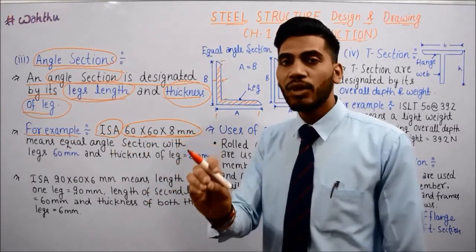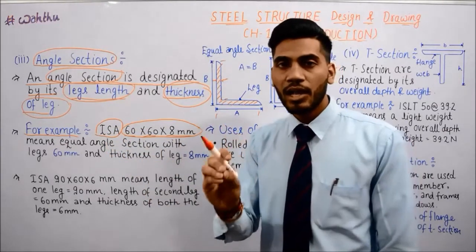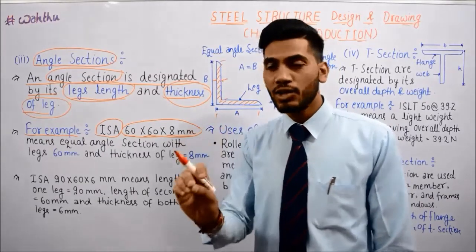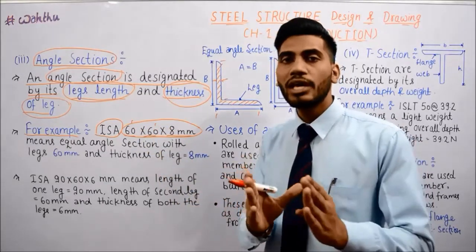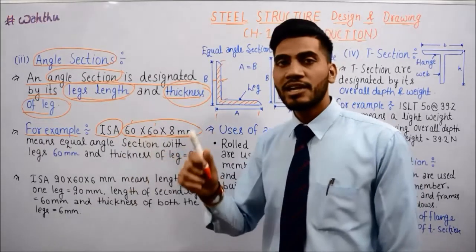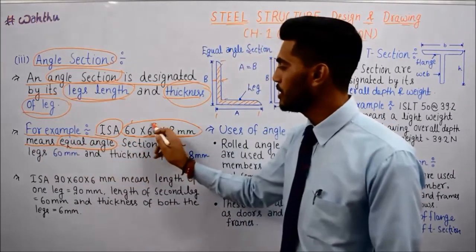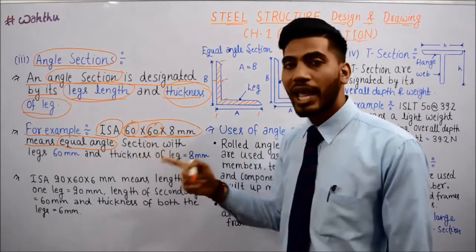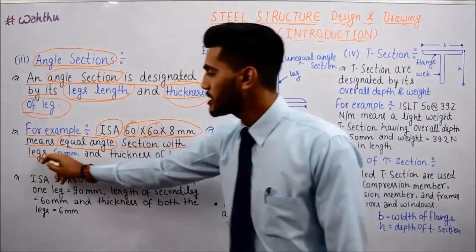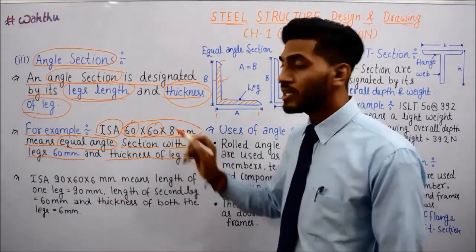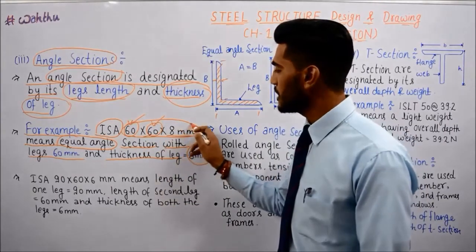If this is an equal angle, then our representation is as an equal angle. So 60 by 60 means first length and second length are both given. Indian Standard Equal Angle means both legs are 60mm — this is the equal angle section with leg 60mm and thickness of leg 8mm.